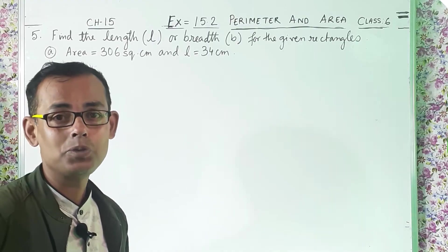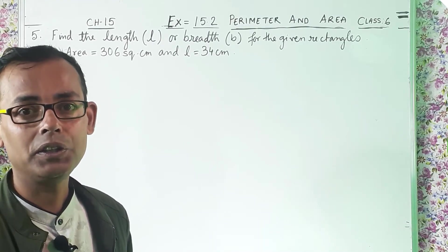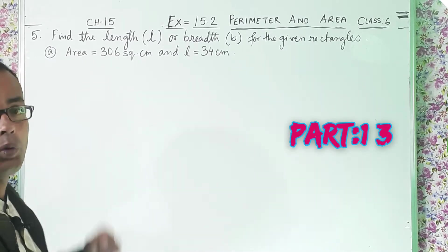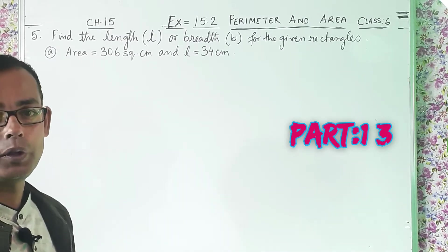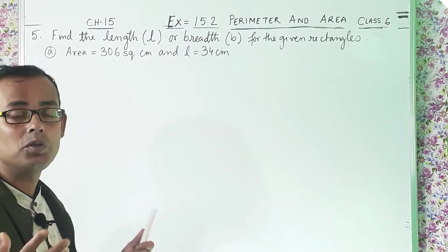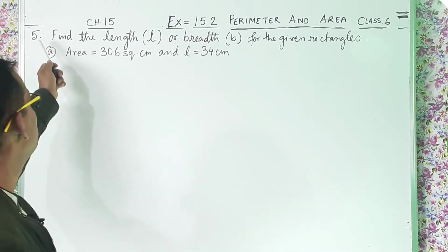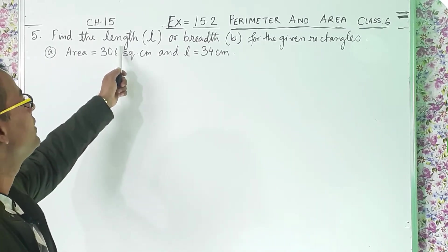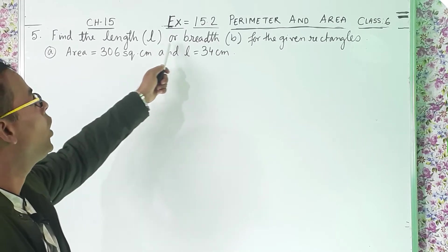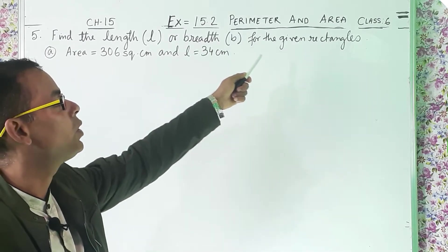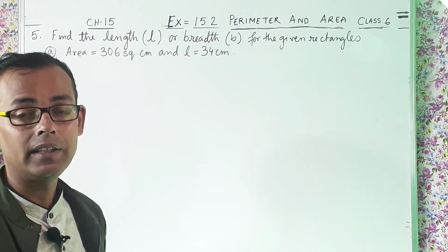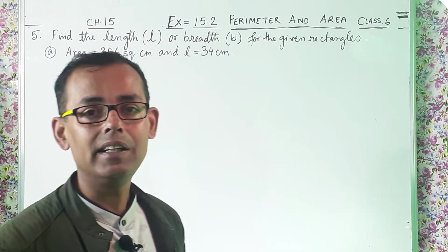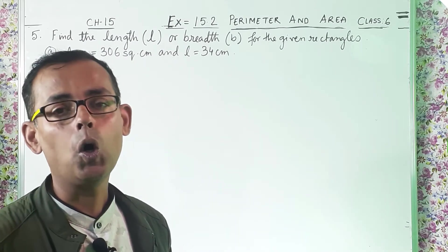Now students, this is a continuation chapter — Exercise 15.2. So today we are going to solve question number 5: Find the length L or breadth B for the given rectangles. That means you have to find out either length or breadth.